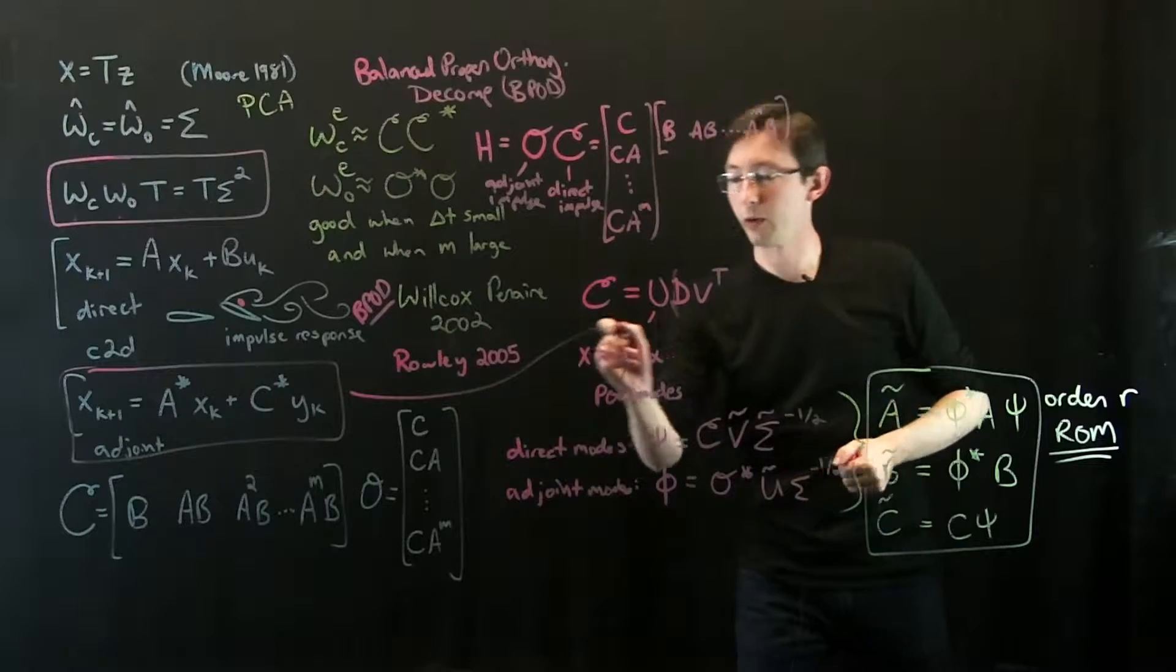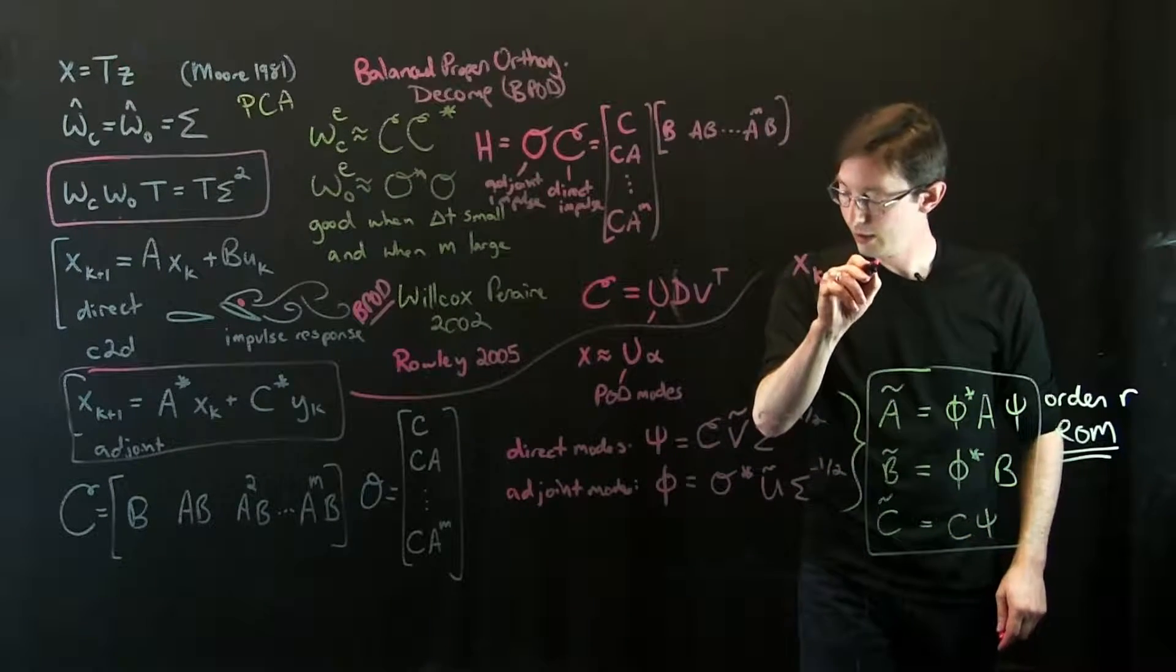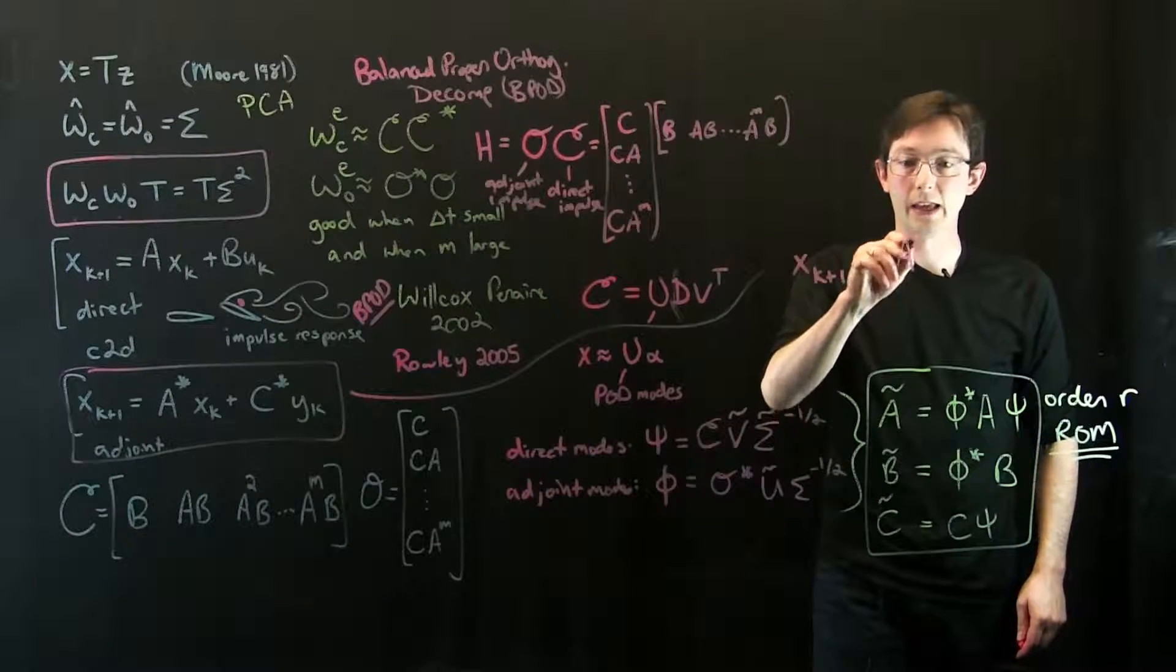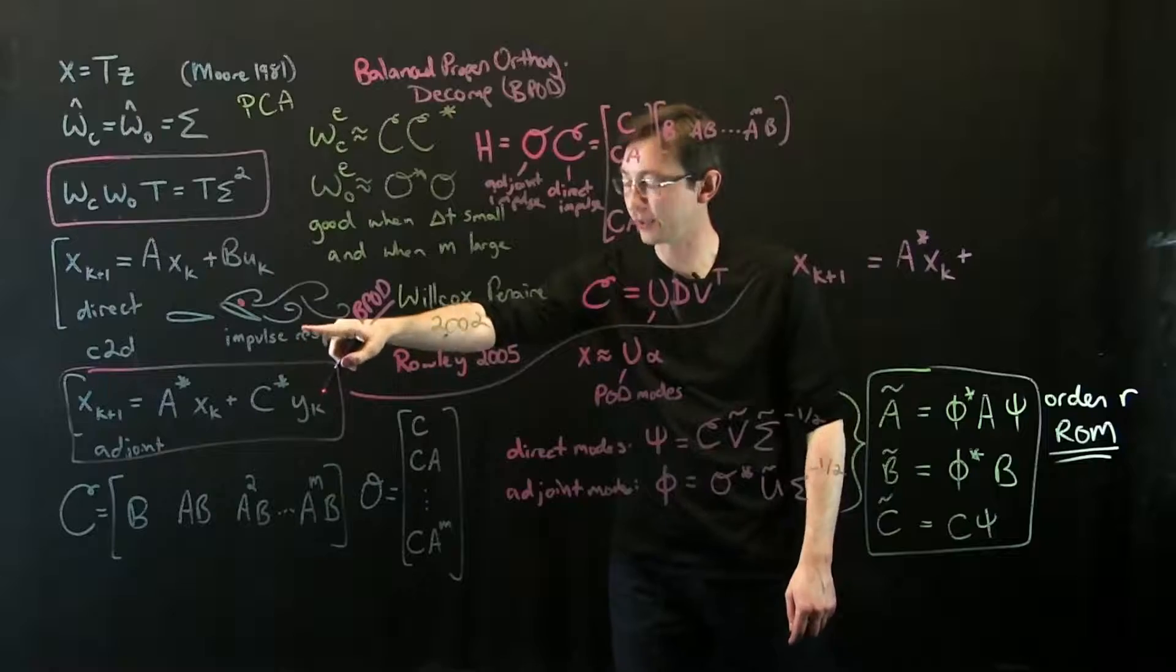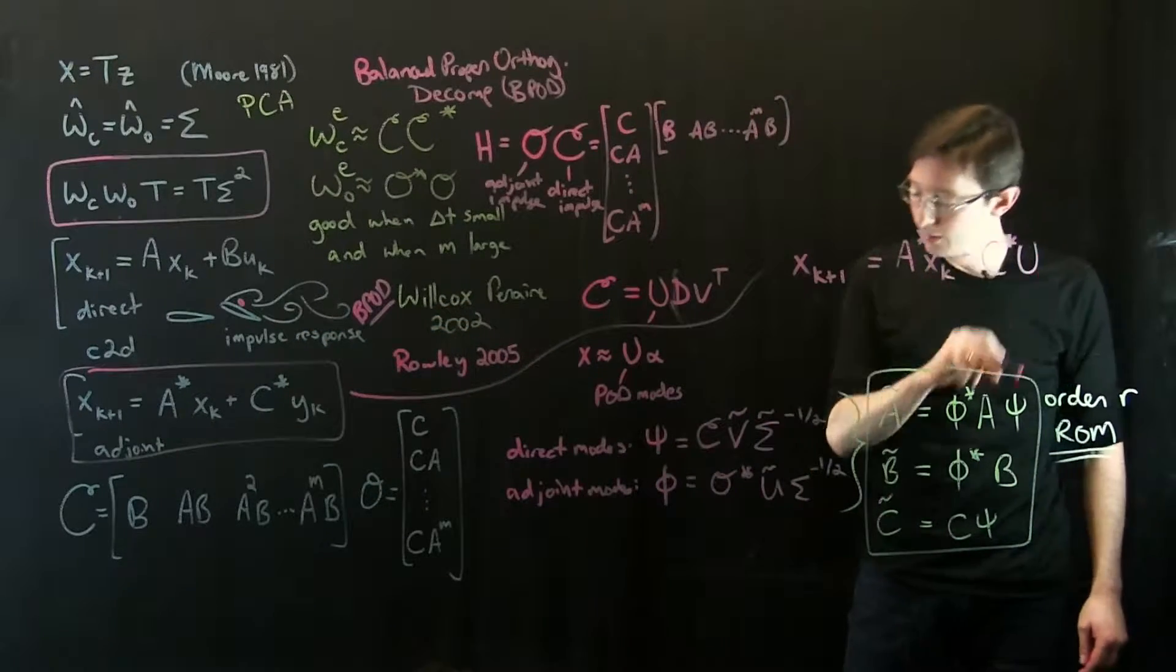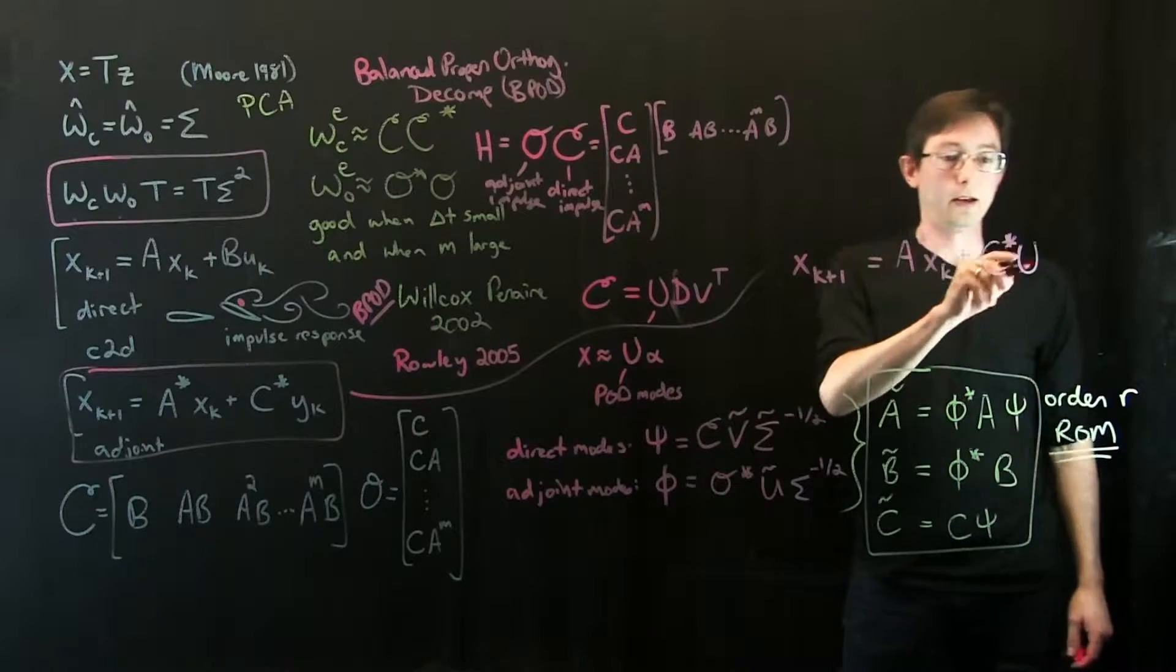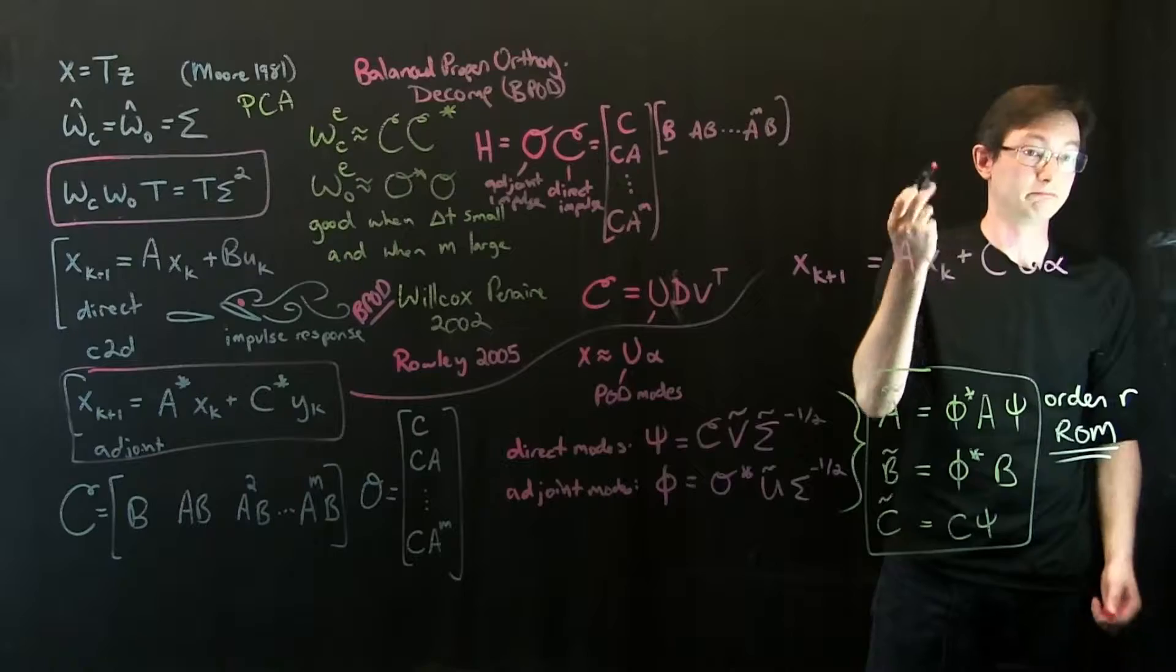And so in that case the adjoint equation becomes XK plus 1 equals A star XK, but now instead of C star Y, we have C star U, I'm going to call this alpha.